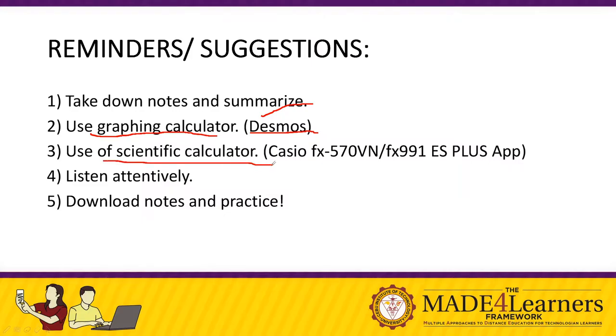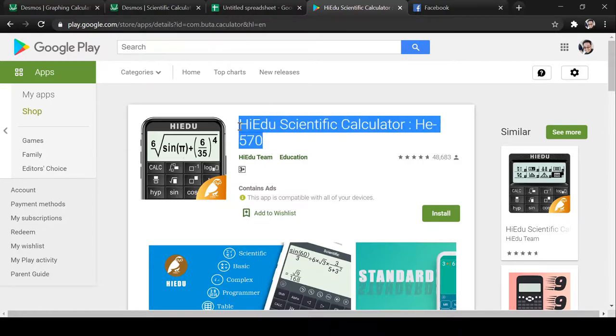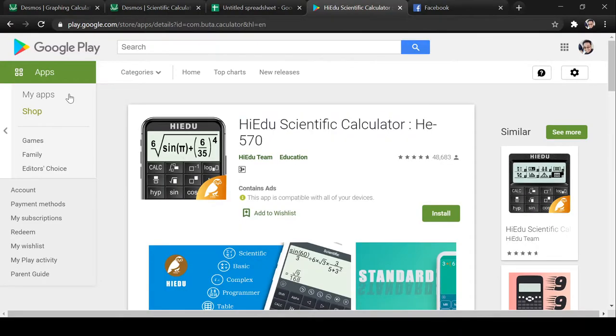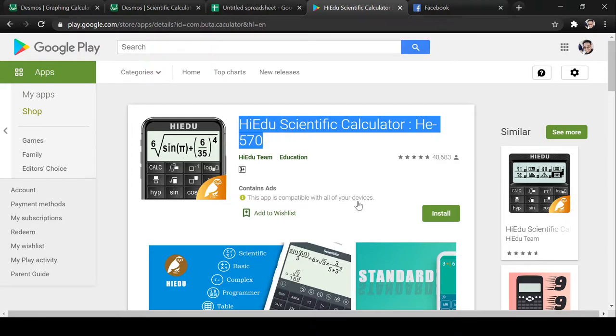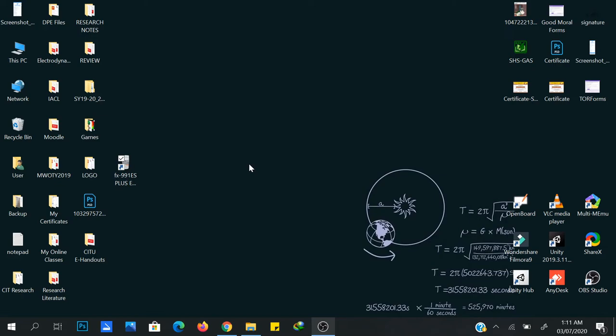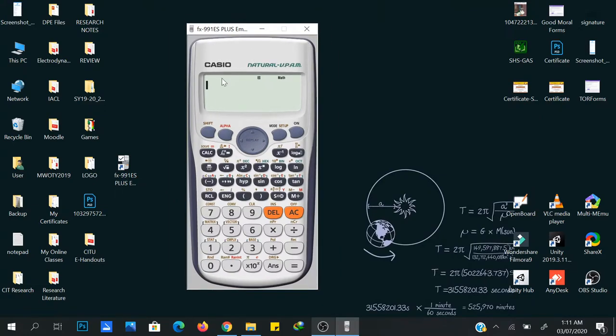Next is the use of scientific calculator. For those who are using your mobile phones, you can actually download this scientific calculator, HiEdu Scientific Calculator HE570. The features of this scientific calculator is similar to Casio, at least similar to that FX991ES. I suggest this app or any other similar app with FX991ES features. For those who are using desktops or laptops, I'll be giving you a download link for a scientific calculator emulator. It's actually Casio 991ES Plus in your computers. I'll be posting a video on how to download and install this emulator.